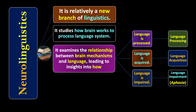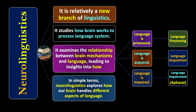So neuro linguistics looks at three different aspects of language: language processing, language acquisition, and language impairment. In simple terms, neuro linguistics explores how our brain handles different aspects of language — listening, learning, speaking, reading and writing.